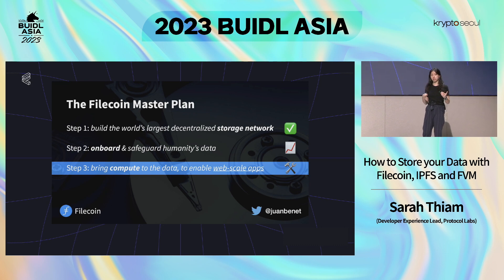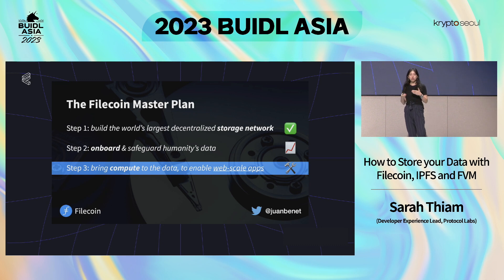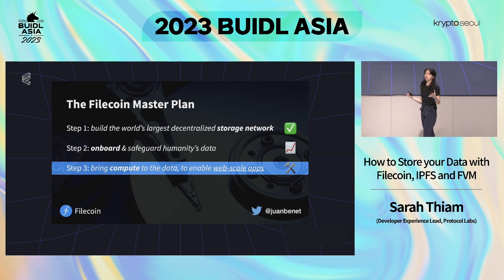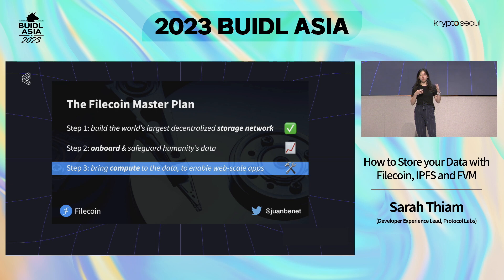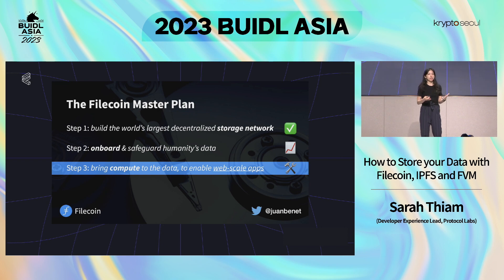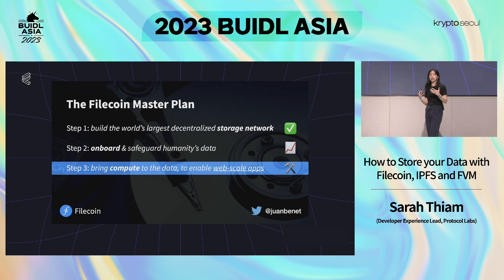We've been building this for about six to seven years, so we have a lot of really good systems and hardware to store your data. Step two is to onboard important data onto this network. We are very focused on programs like the Filecoin Slingshot program, where we upload huge sets of data onto the Filecoin network and keep it stored there for a really long time.